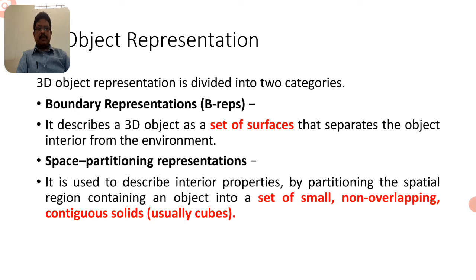An object placed in three dimensions has some portion located in the XY plane, some in the YZ plane, and some in the ZX plane. This means the object can be represented specifically as a boundary representation — it is a set of surfaces.